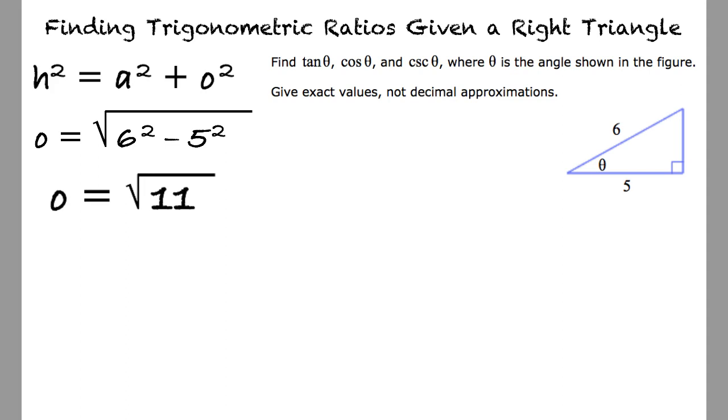Next, we can recall the trigonometric ratios appropriate for this problem. Tangent is opposite over adjacent, which equals the square root of 11 over 5.